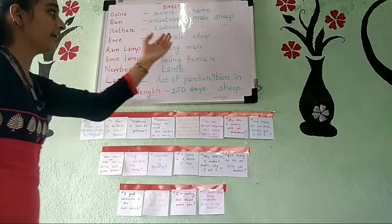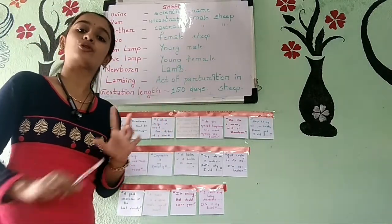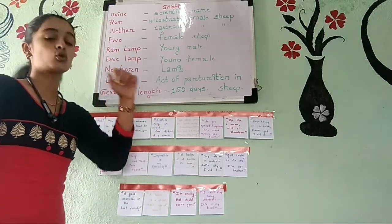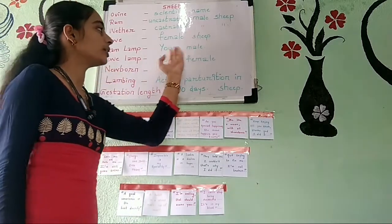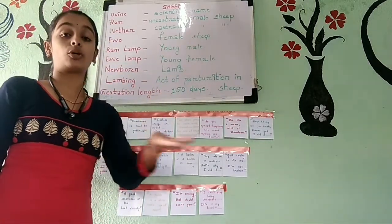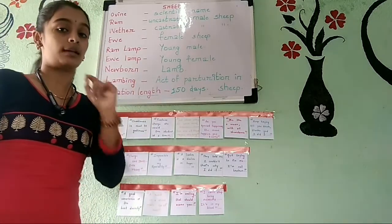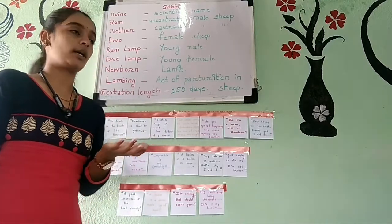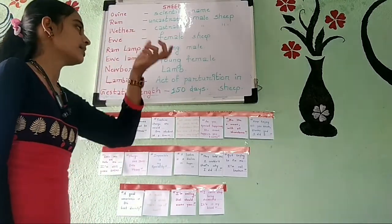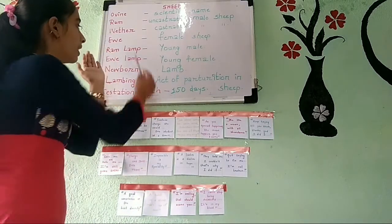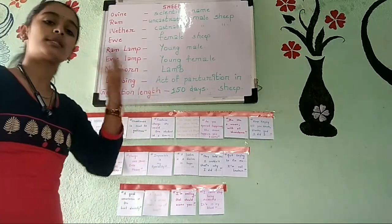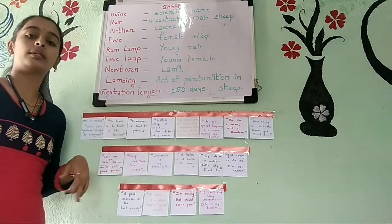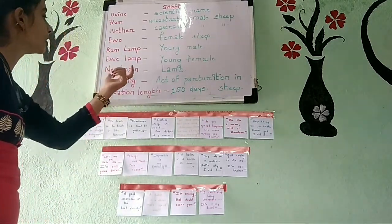Next, ewe — ewe is a female sheep. Whatever female sheep there is, that is termed as ewe. Next, we have ram lamb — whatever the young male sheep is, which has not become old yet, that term is ram lamb. Next, ewe lamb — whatever the young female sheep is, that will be called a ewe lamb. So, ram refers to male and ewe refers to female.